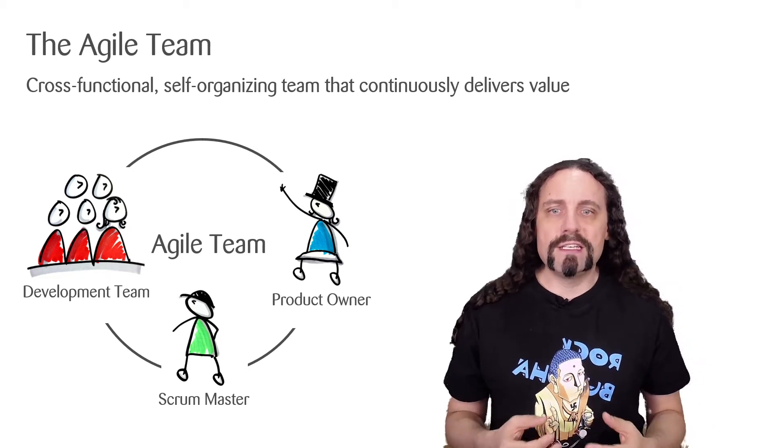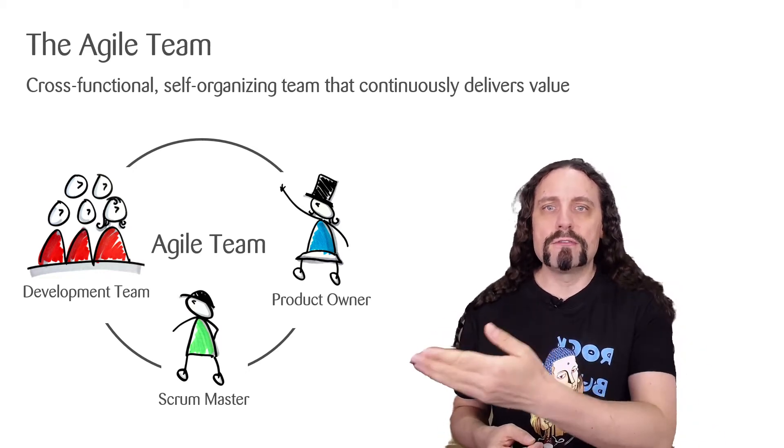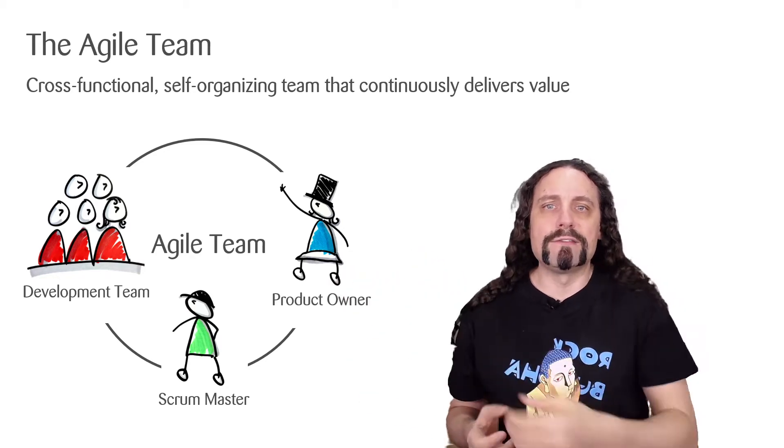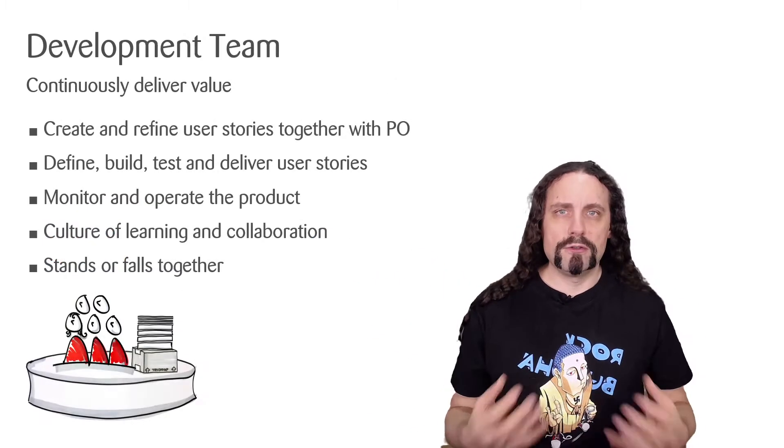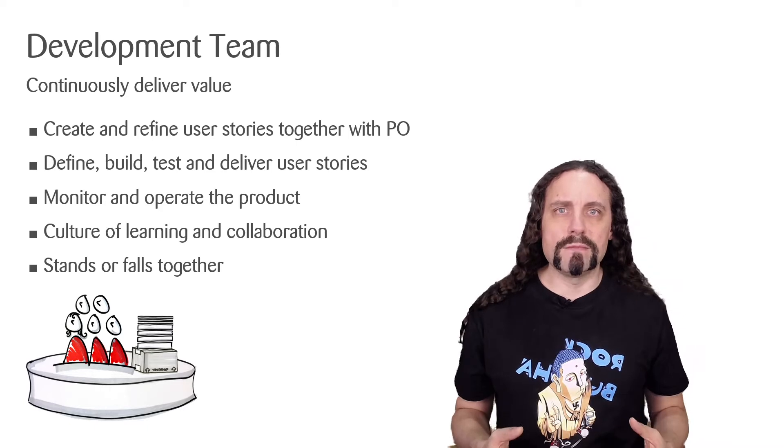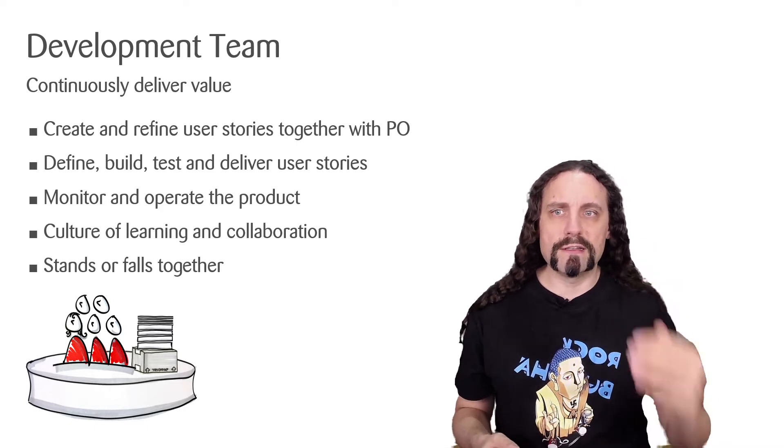Such an Agile team consists of product owner, scrum master, and the development team. The main task of a development team is to continuously deliver value.